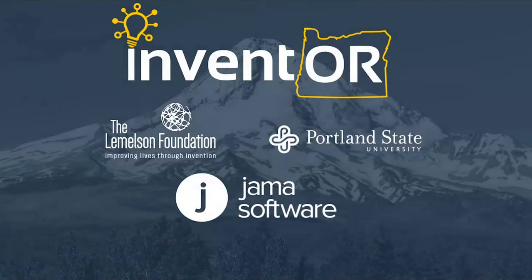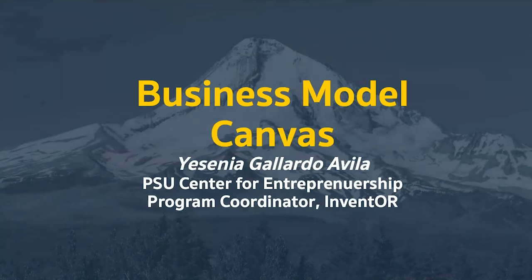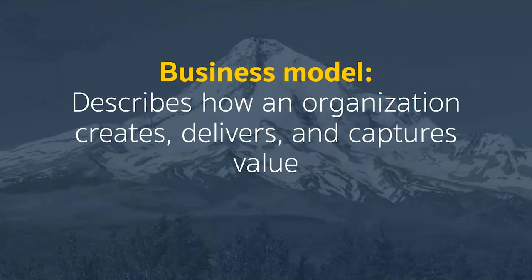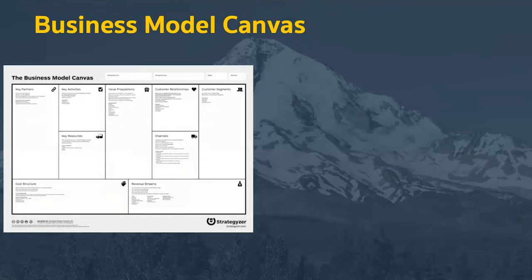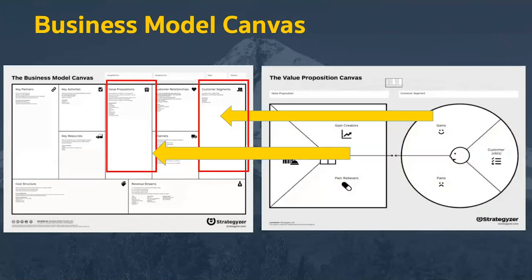Thanks to our sponsors: the Lemelson Foundation, Portland State University, and JAMA Software. This module focuses on the business model canvas. A business model describes how an organization creates, delivers, and captures value for your customers. The business model canvas is a tool developed by Strategizer that helps you work through your business model. It is meant to be used with the value proposition canvas covered in the second module, which helps you understand your value proposition and your customer segments. Please take a look at module two if you want to learn more.